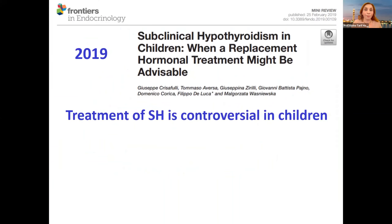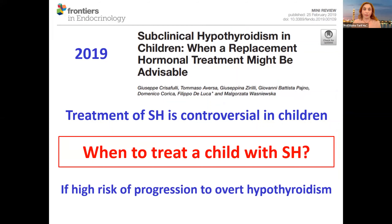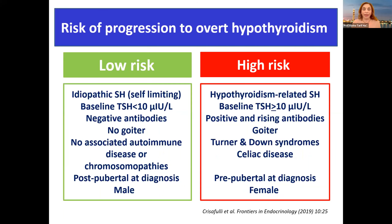To sum up: a very nice article published in Frontiers in Pediatric Endocrinology on subclinical hypothyroidism — when hormonal replacement treatment might be advisable — made a very clear statement: treatment of subclinical hypothyroidism is controversial in children. The question raised was when to treat, and the answer was: if there is a high risk of progression to overt hypothyroidism.